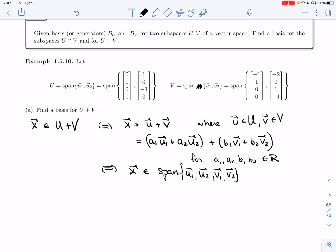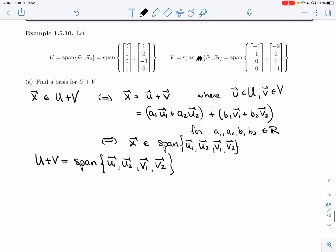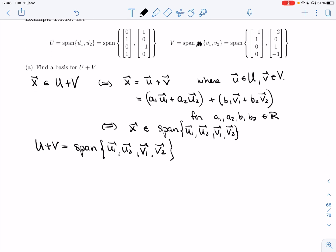So U plus V is the span of all four vectors: U1, U2, V1, V2. What we just spent a few videos learning how to find a basis for this span, so we know how to do this.